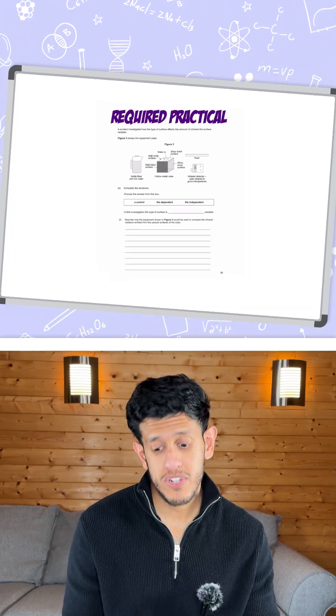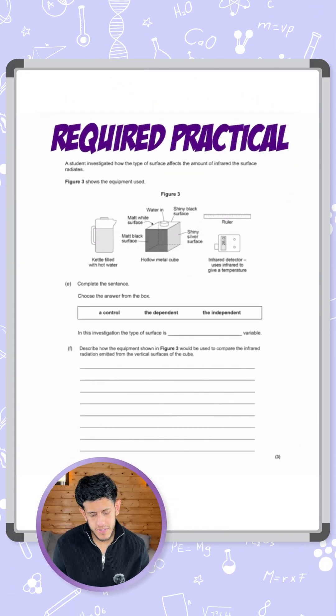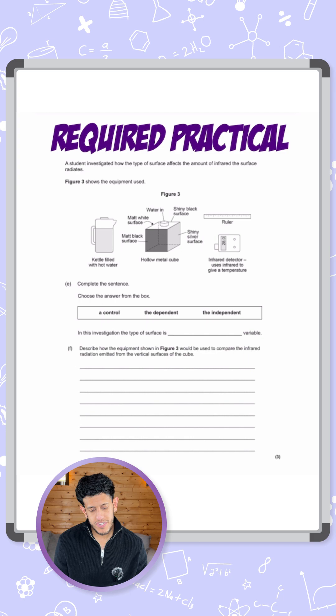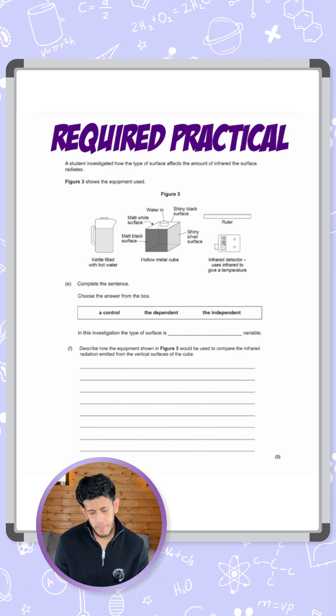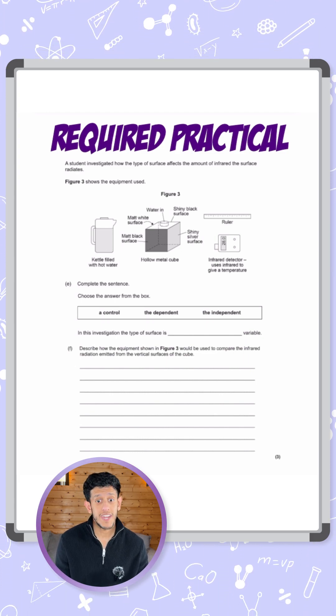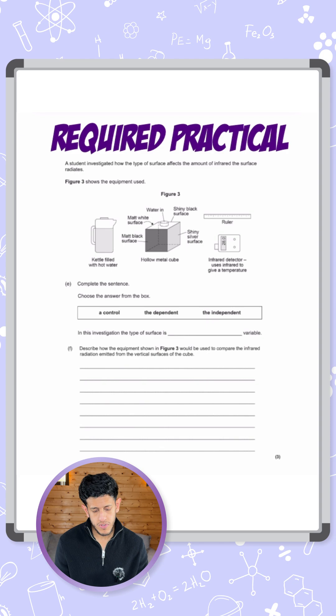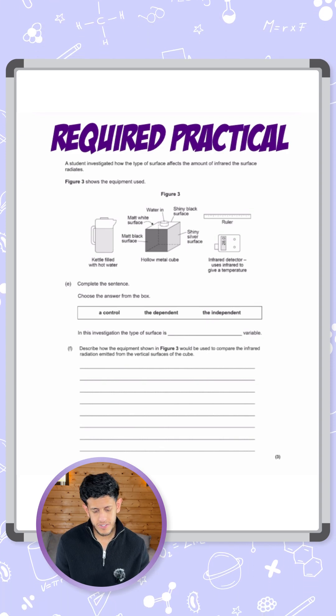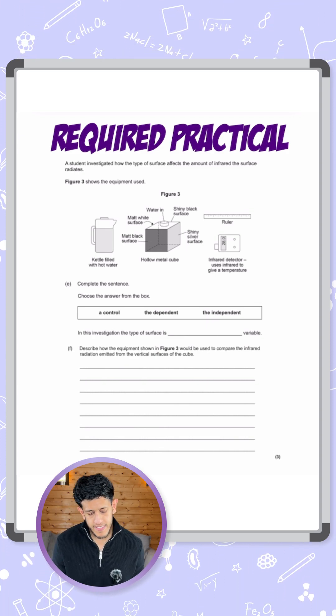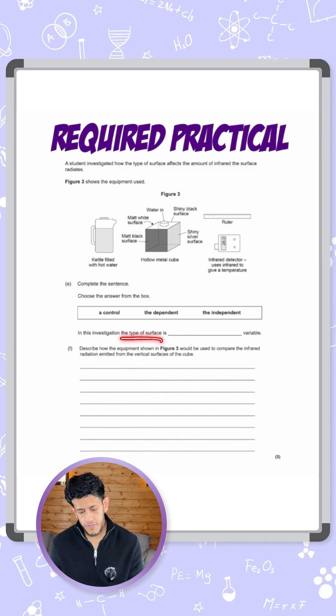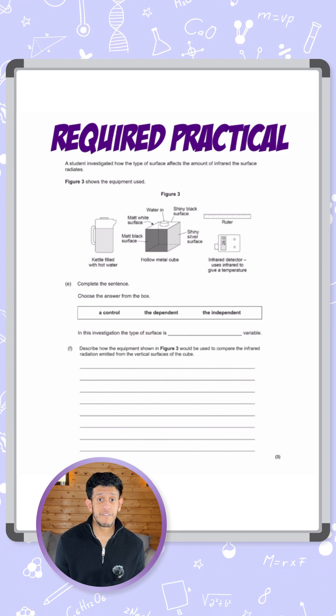Okay guys, so let's look at this required practical on infrared radiation. A student investigated how the type of surface affects the amount of infrared the surface radiates. Figure 3 shows the equipment used, and it says complete the sentence choosing one of the answers. In this investigation, the type of surface is the something variable.